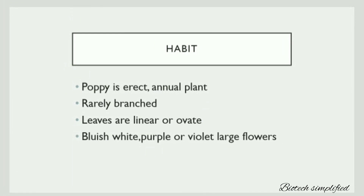Next let us discuss about its habit. The Papaver plant is also known as the poppy plant. This poppy plant is erect and is an annual plant. It is rarely branched and its leaves are linear and ovate. The poppy plant has flowers in different colors — bluish white, purple or violet.